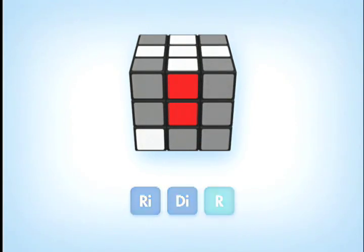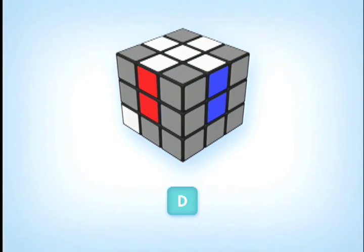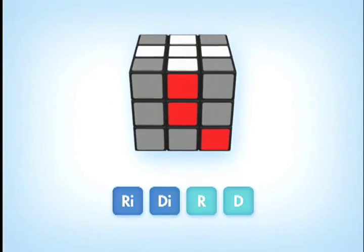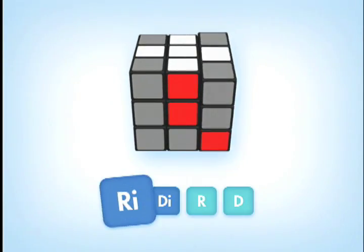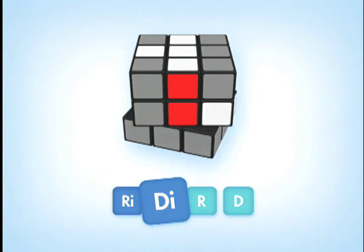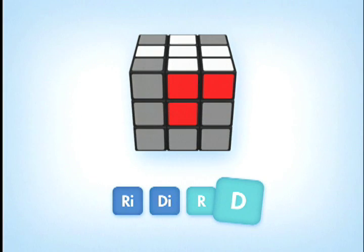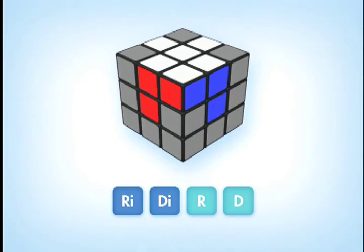Once on the bottom D-face, rotate the bottom D-face until that corner piece is directly below its intended top U-face position. Once it's there, we do the sequence R-I-D-I-R-D until it is in the correct position on the top U-face location.